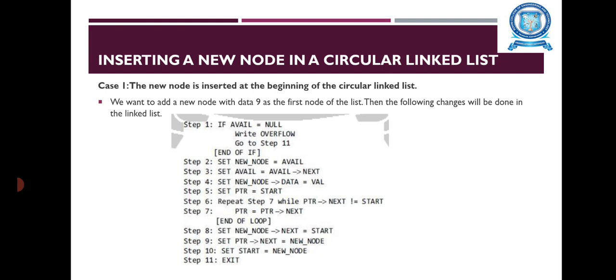Inserting a new node in the circular linked list — here also some cases are available. In the first case, the new node is inserted at the beginning of the circular linked list. We want to add the new node with data 9 as the first node of the list. The following changes can be done in the linked list. This is the algorithm.